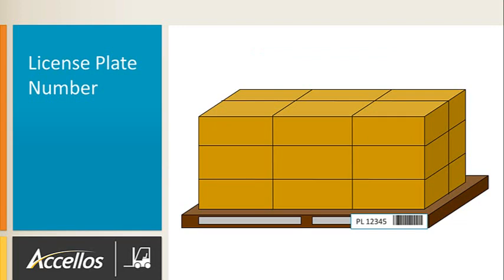Many warehouse operations prefer to consolidate cases onto a pallet, then label the pallet with a license plate. The license plate then becomes the identification for the movable unit throughout the warehouse, up until selection for picking. A license plate pallet can hold multiple or a single item. License plate pallets help improve material handling efficiencies.